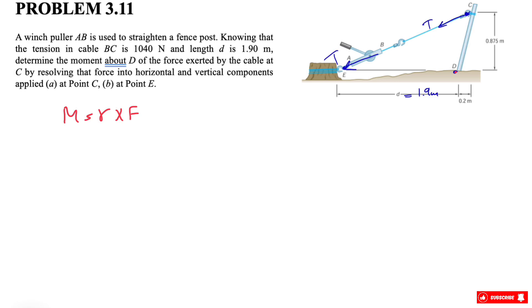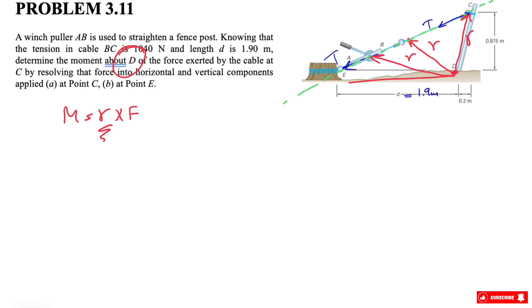In r cross F, our r is the distance vector. As discussed in the previous video, r would be any line that connects the point we're finding the moment about — which in this question is point D — to the line of action of the force. So whether this is our r or that is our r, the line of action of force T, shown in green, will give us the same answer.